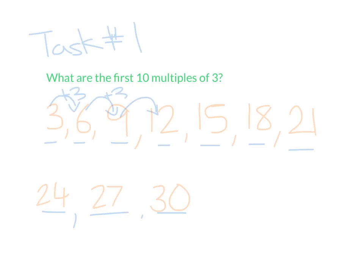You can use this process, or you can open up your 100s chart and count 3 each time. Either way works. Okay, that's task number 1. Excellent.